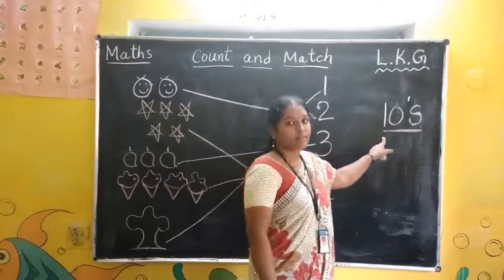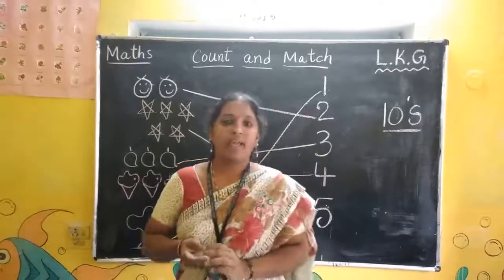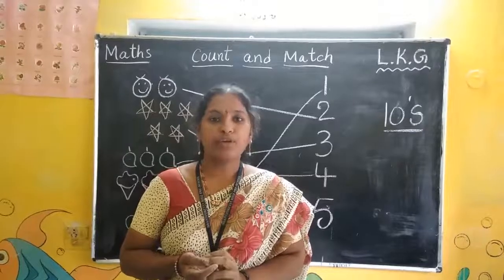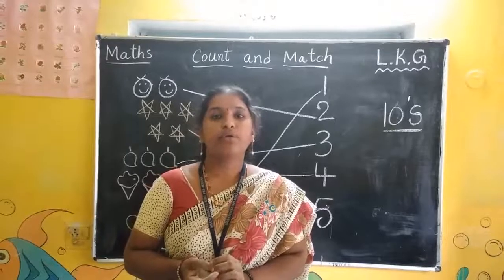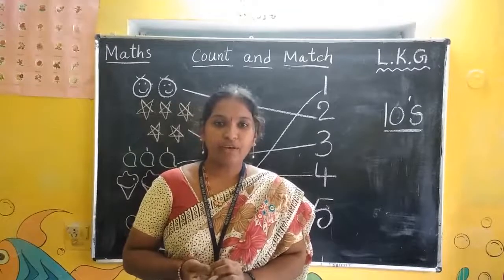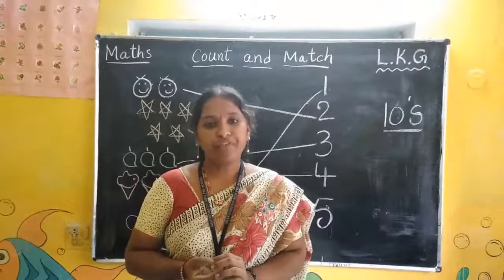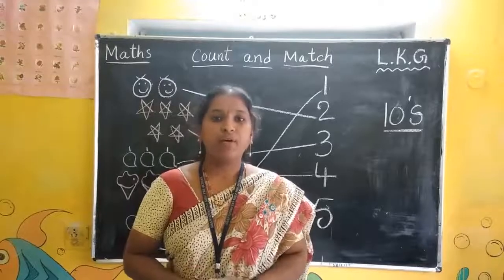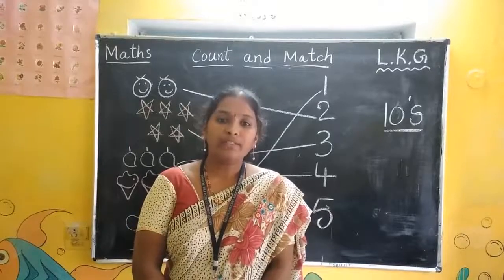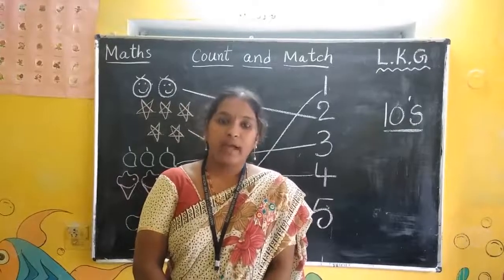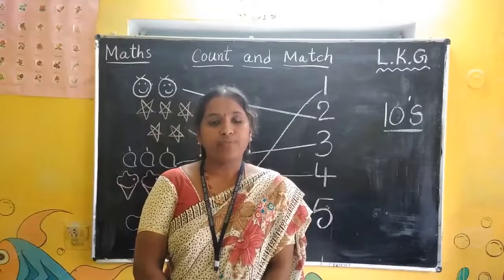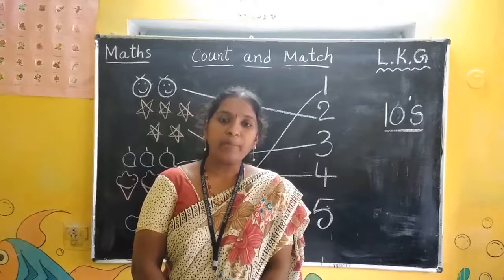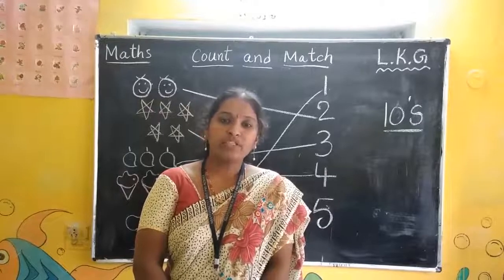Now tens. Come and tell me, say loudly. One zero — ten. Two zero — twenty. Three zero — thirty. Four zero — forty. Five zero — fifty. Six zero — sixty. Seven zero — seventy. Eight zero — eighty. Nine zero — ninety. One zero zero — hundred. Practice well. Thank you, children.